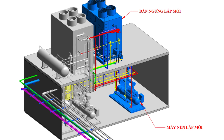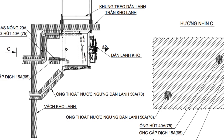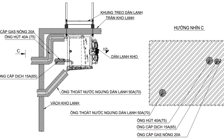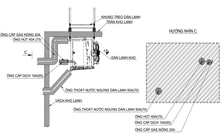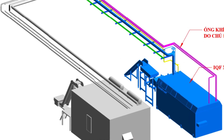Challenges and future trends. Sustainable practices: the industry is moving towards more sustainable, energy-efficient technologies. Alternative refrigerants: research is ongoing to find substances with lower environmental impact. Smart systems: integration of IoT and AI for smarter, more efficient refrigeration systems.